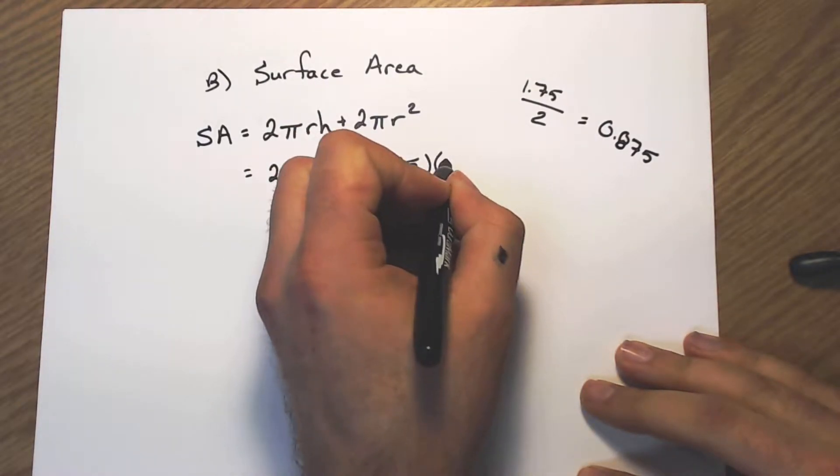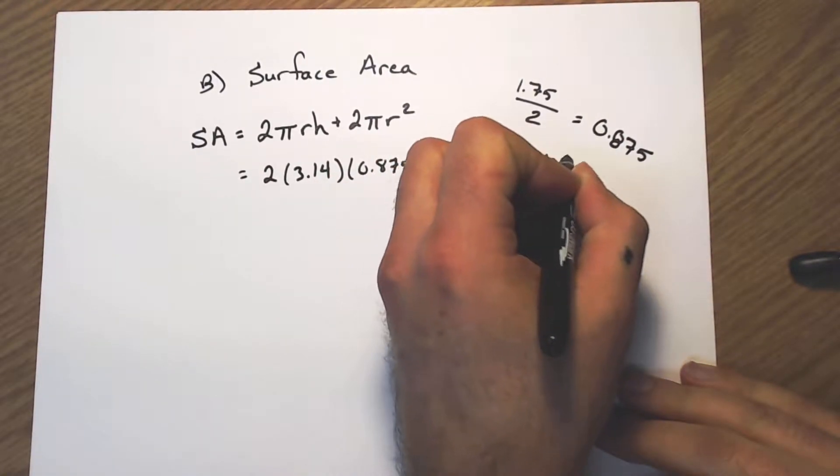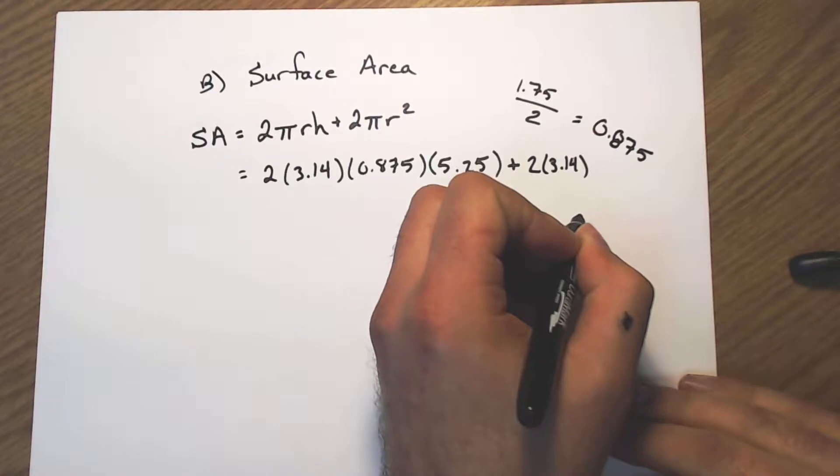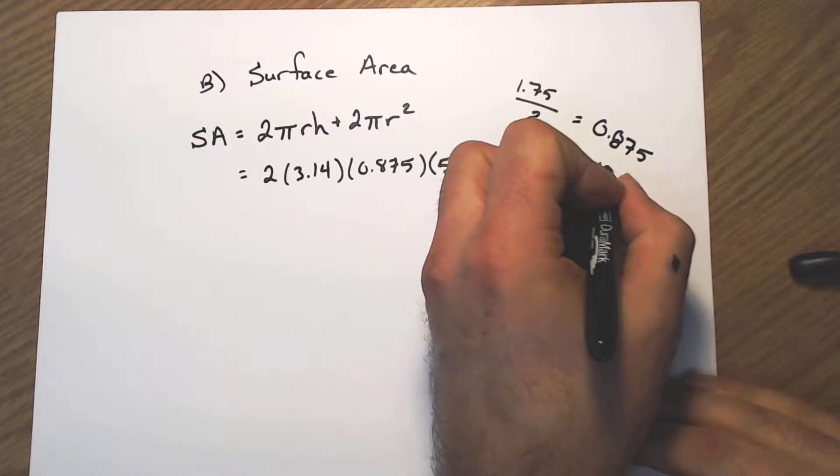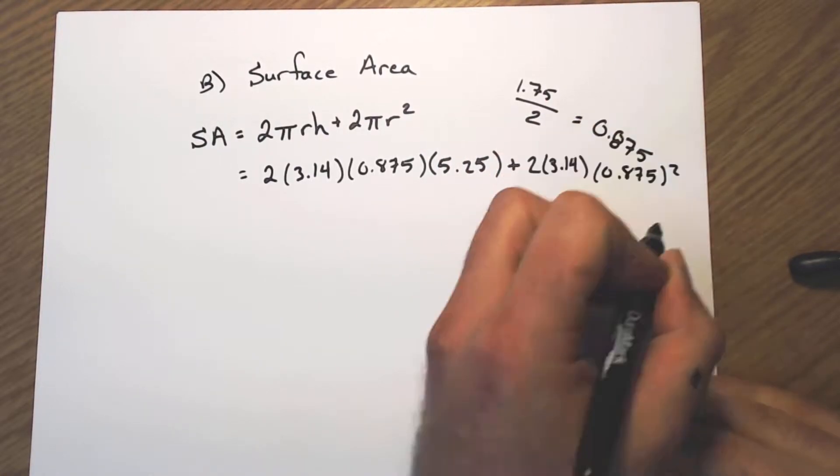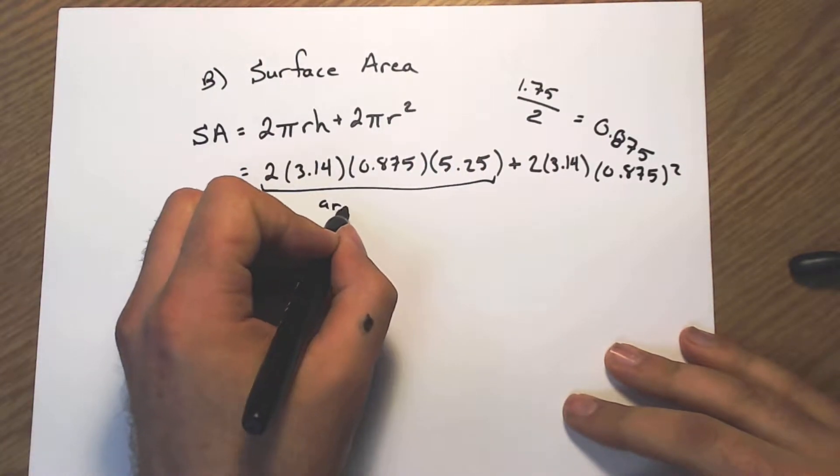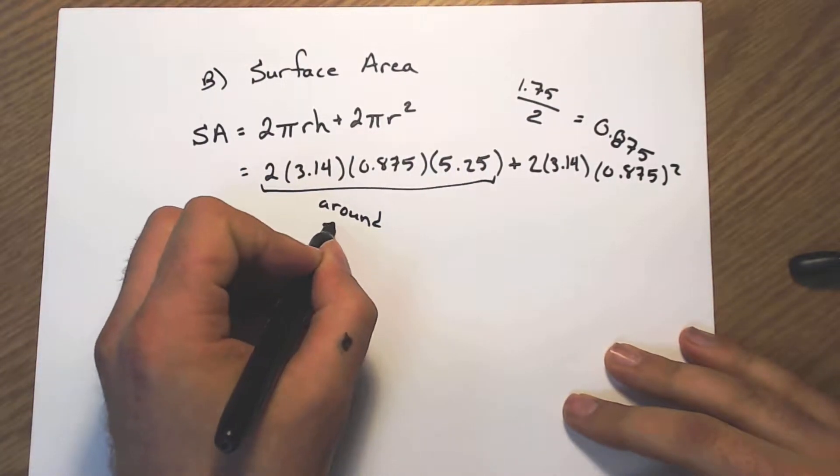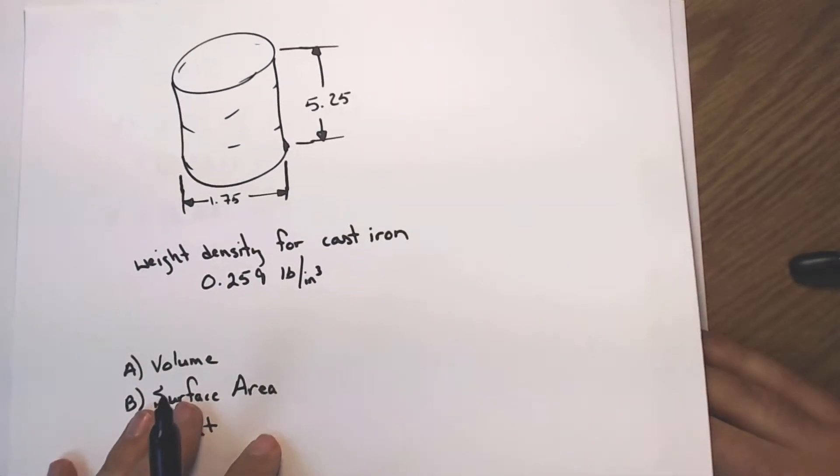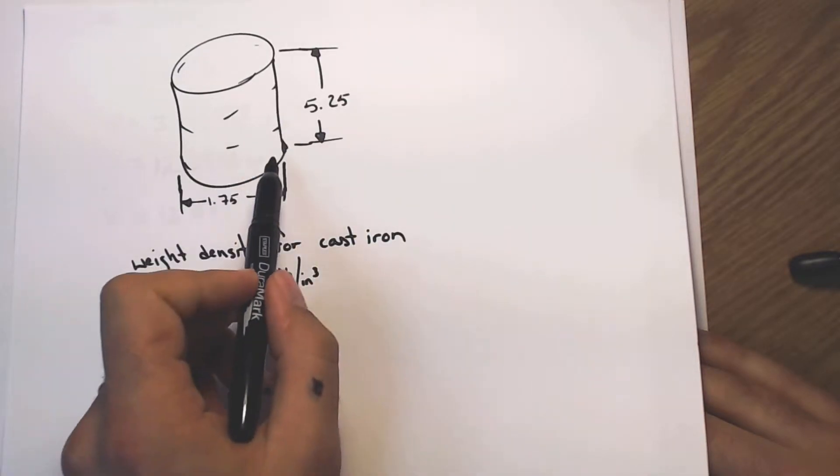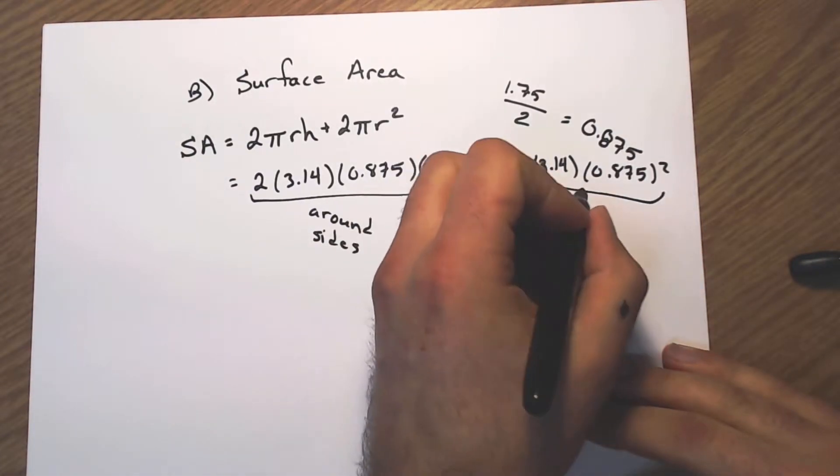So I'm going to put in this time 0.875 for my radius times my height of 5.25. I have to add to that 2 times pi and then it's my radius squared, 0.875 squared. This chunk here is the part that is around my sides. So if I go back to that original picture, that would be this piece going all the way around.